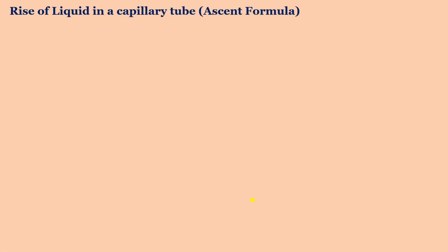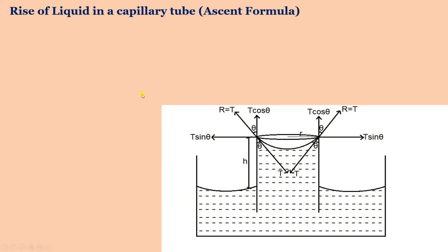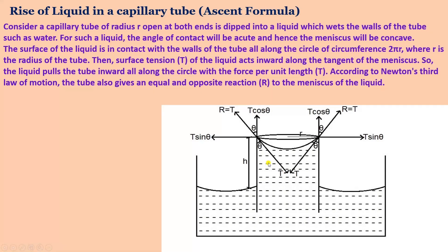Now we will discuss the rise of liquid in a capillary tube — the ascent formula. Consider a capillary tube of radius r, open at both ends, dipped into a liquid which wets the wall of the tube. The angle of contact will be acute and the meniscus will be concave. Let theta be the angle of contact and T be the surface tension of the liquid. The liquid surface is in contact with the wall of the tube along a circle of circumference 2πr, and due to surface tension, force T per unit length acts along the tangent to the meniscus in the inward direction.